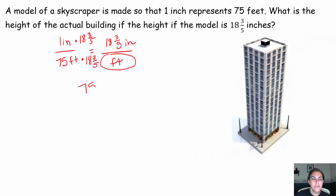Okay, so let's do 75 times 18 and three-fifths. That's 75 times 5 times 18, use your calculator if you need, is 90 plus 3 is 93 over 5. Multiply straight across the top, straight across the bottom, 75 times 93.